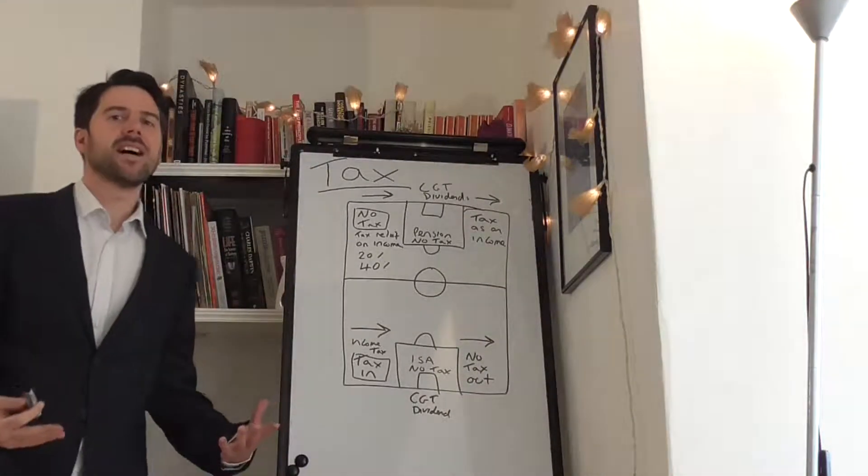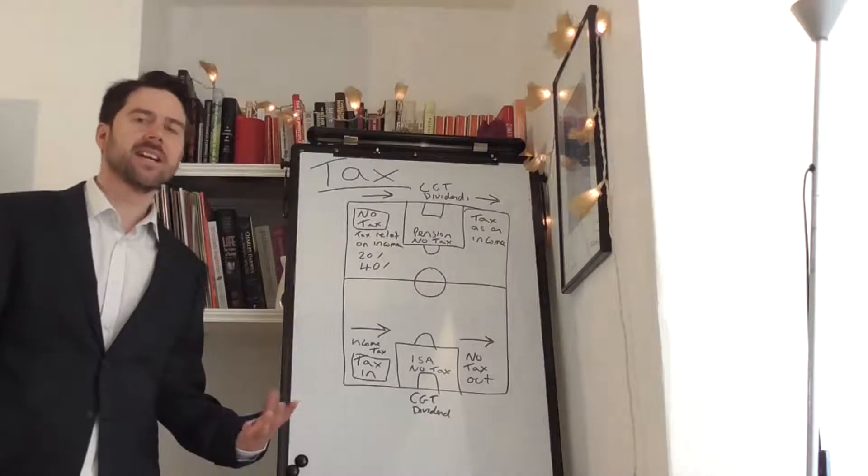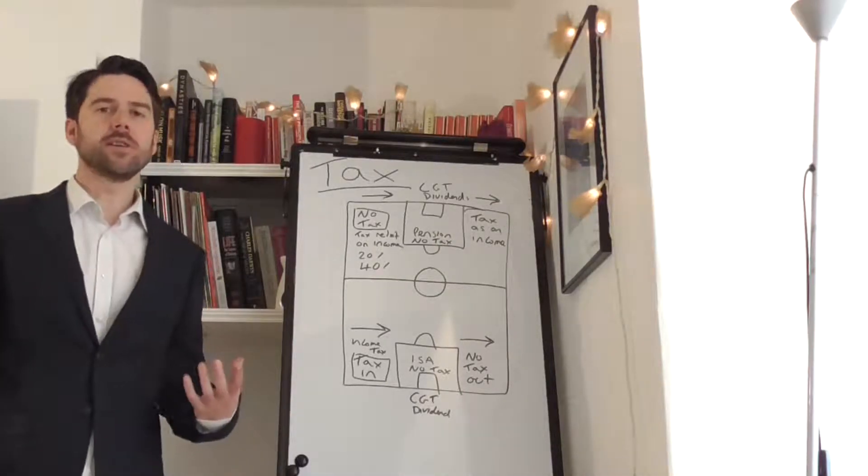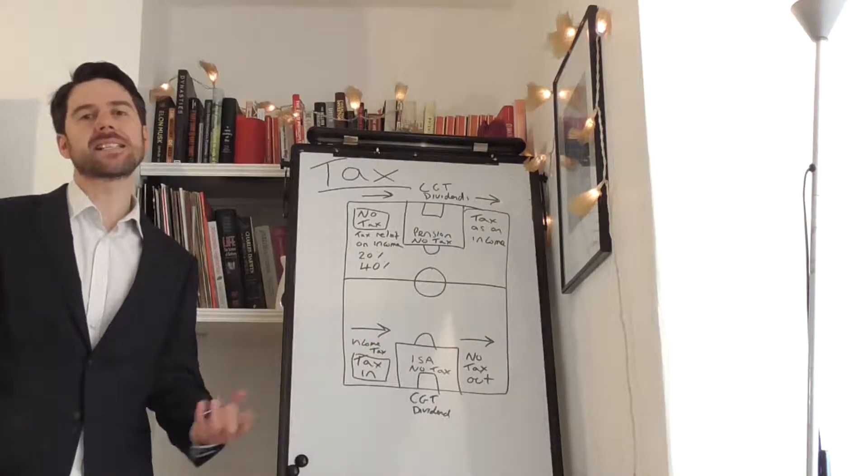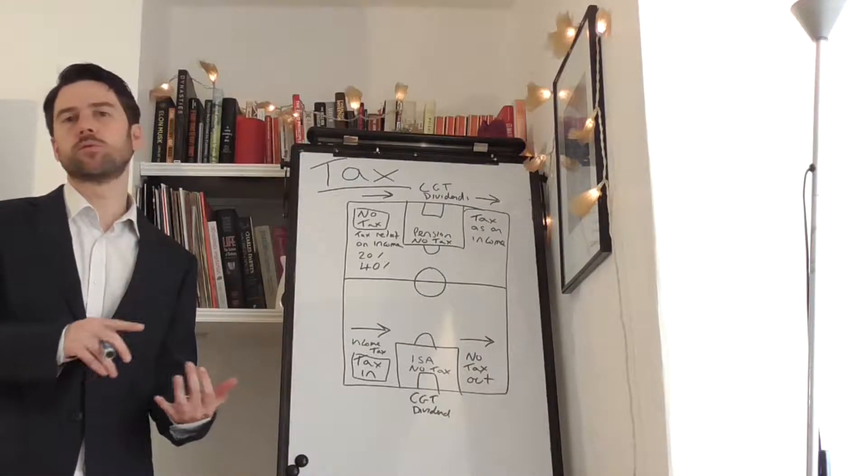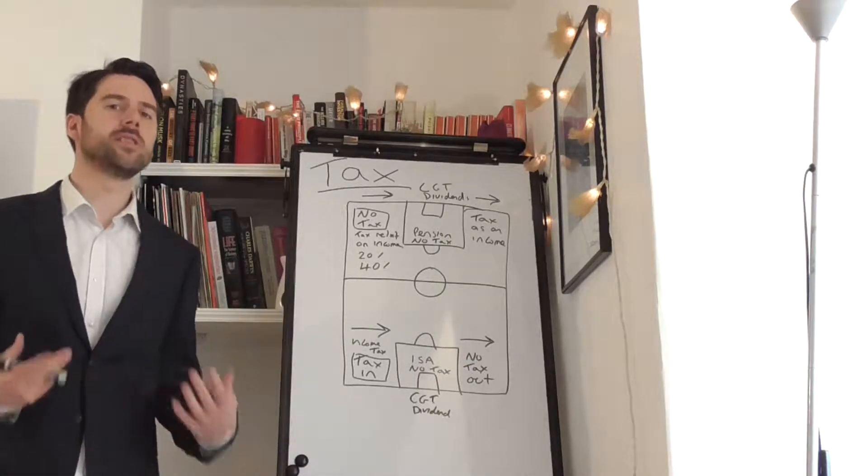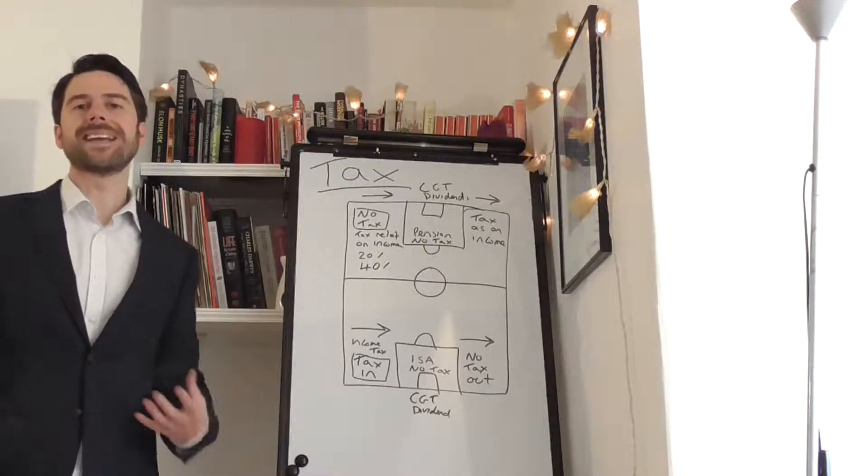We're going to talk about tax. Tax is what is used to pay for things. The government takes taxes and uses them to pay for hospitals, roads, schools, and all those good things. We're all for paying tax.